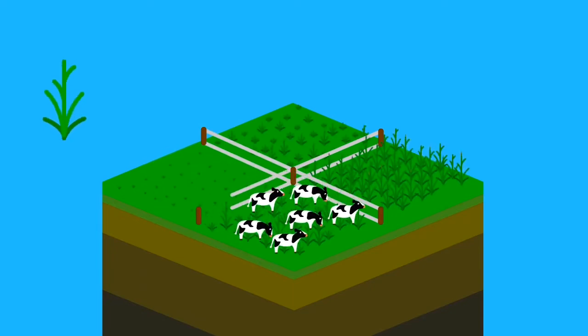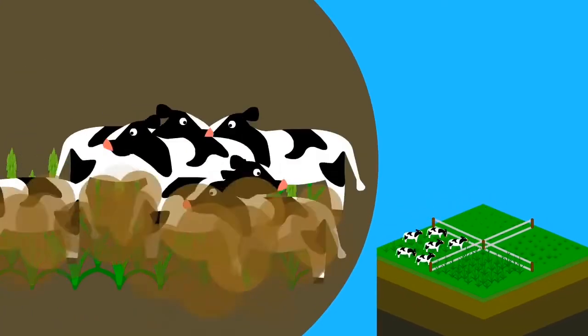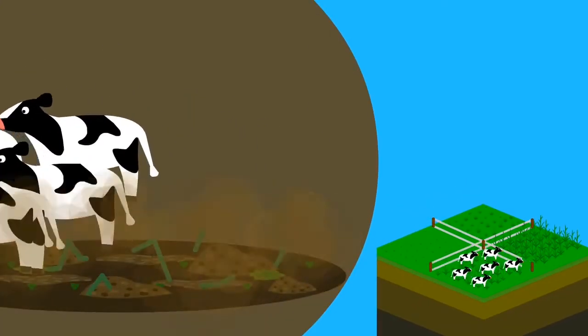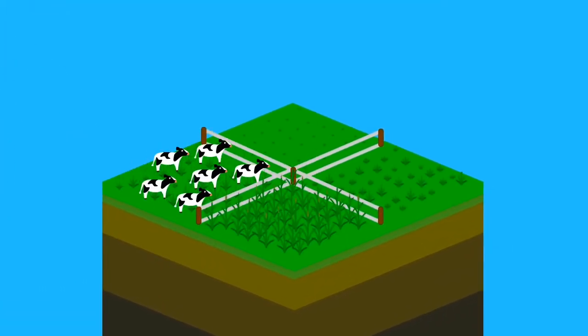All that biomass in the grass is carbon that comes from the air. Not all of the grass gets eaten, however. Some of it gets pooped on and trampled, which ends up creating the perfect conditions for new topsoil to be built. This ends up happening incredibly quickly.